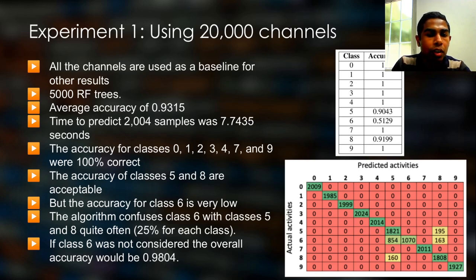The accuracy of classes 5 and 8 are acceptable. However, class 6 produces a very low classification accuracy. The algorithm confuses class 6 with classes 5 and 8 quite often. If class 6 was not considered, the overall accuracy would be 0.98. We take this experiment as the baseline for our other evaluations.